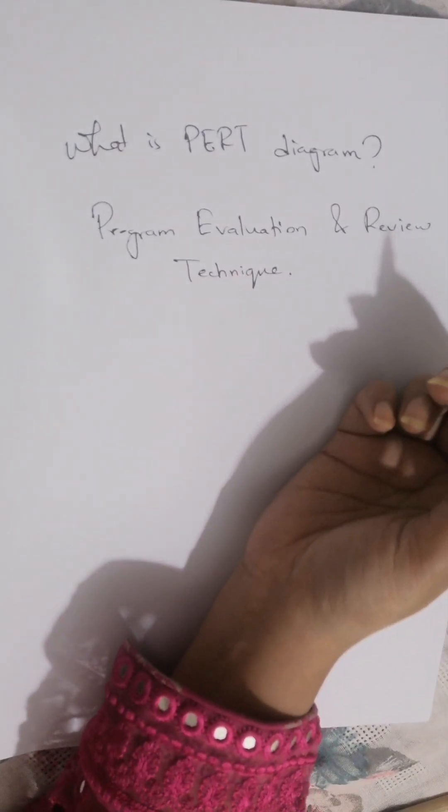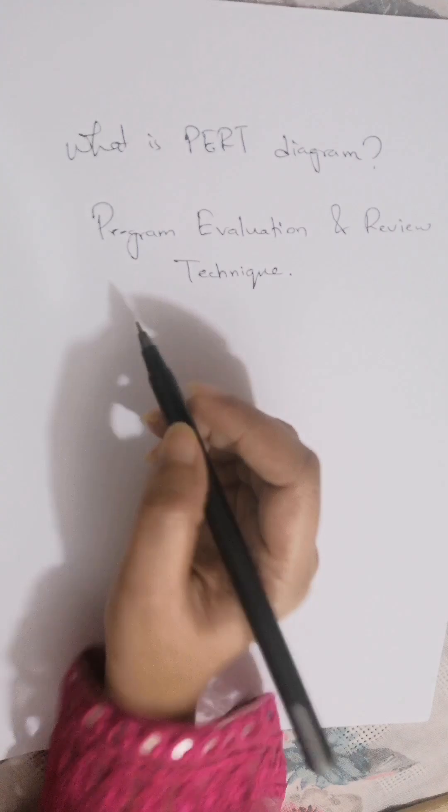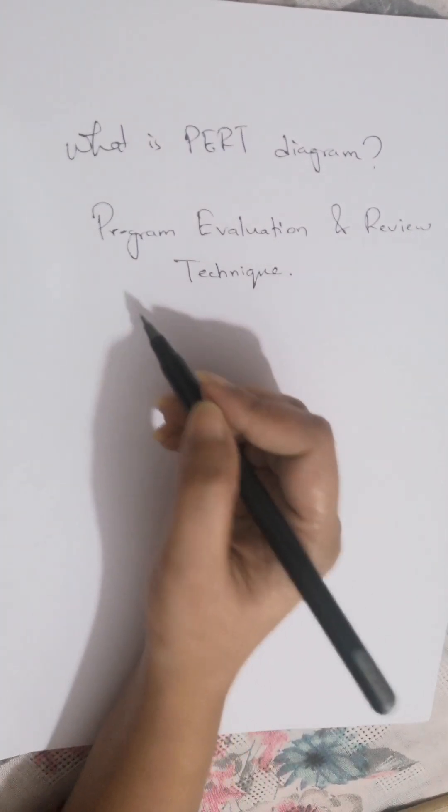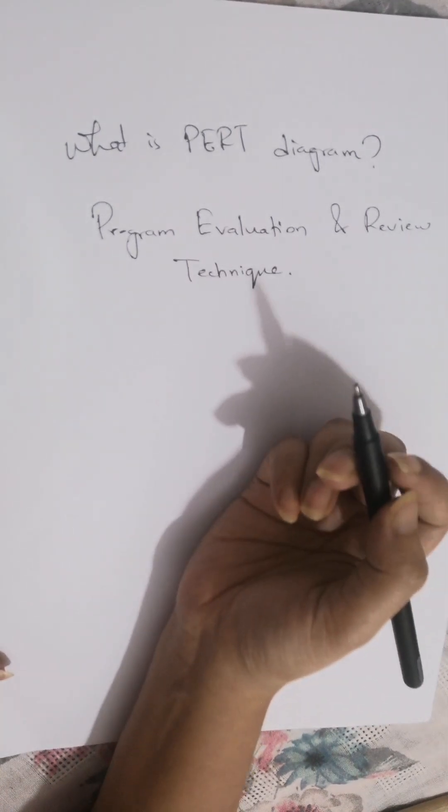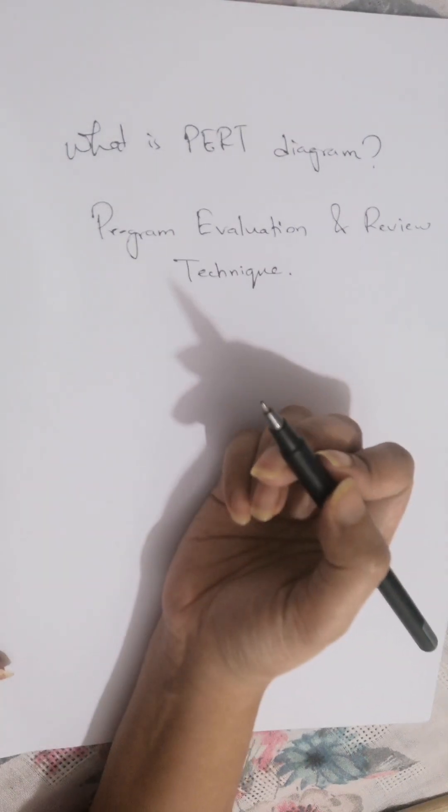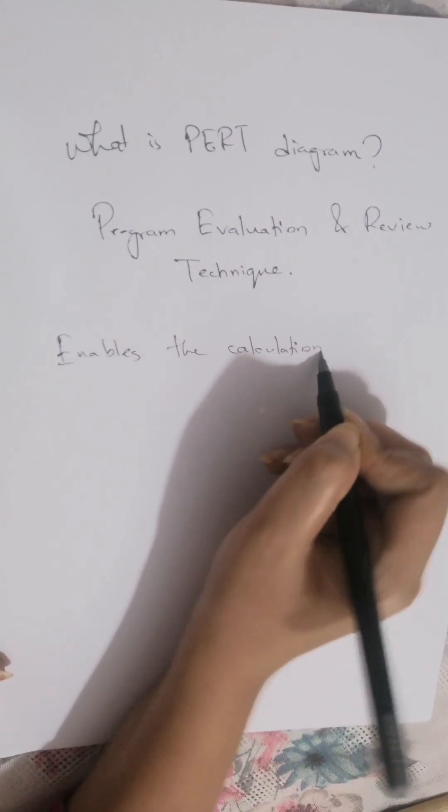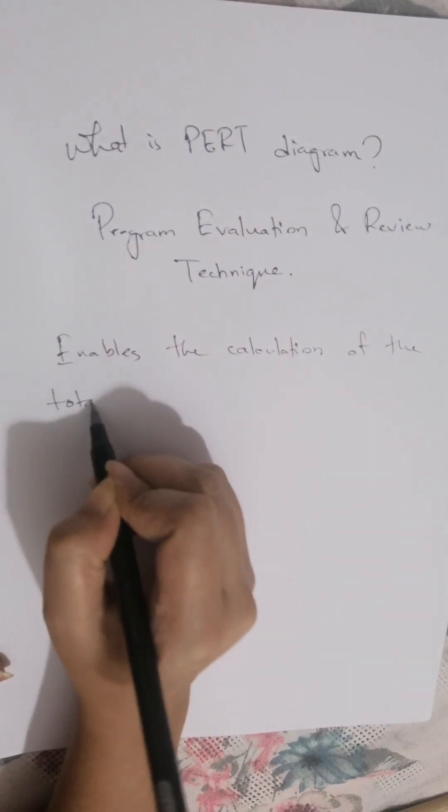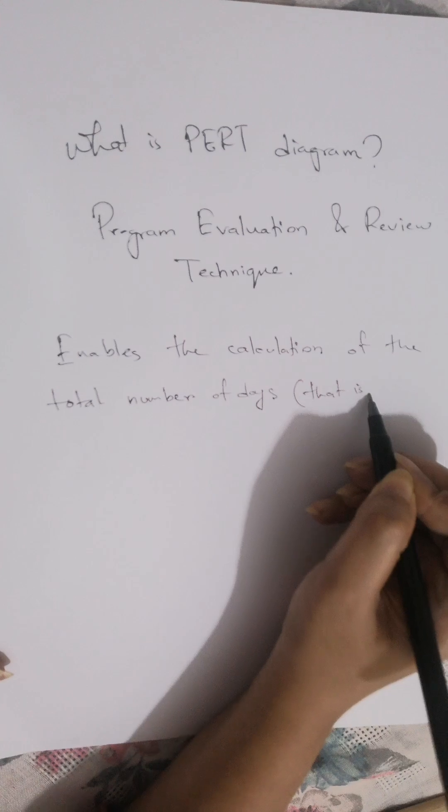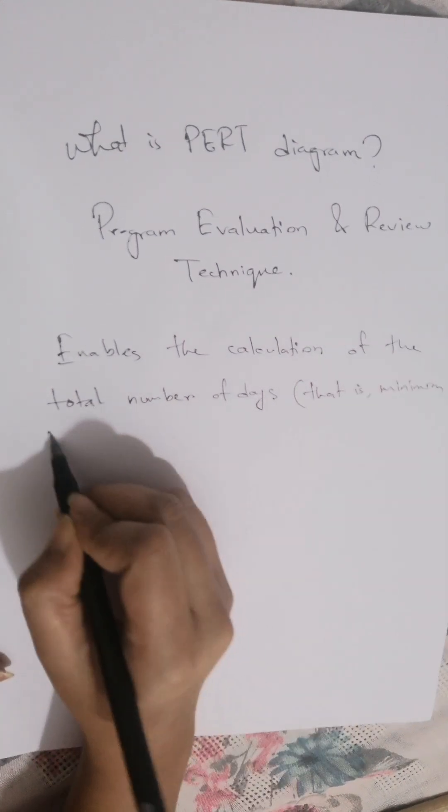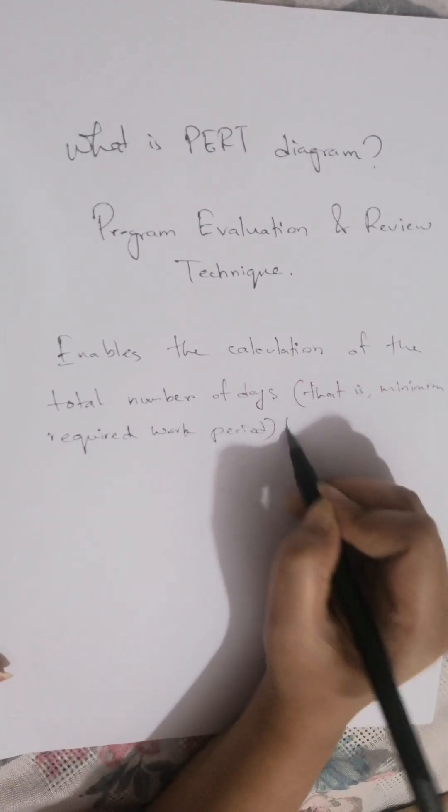PERT is a scheduling method. With PERT, a plan is made for estimating an activity period. So PERT can be used for large-scale complex projects. PERT enables the calculation of the total number of days, that is minimum required work period, to complete the project.